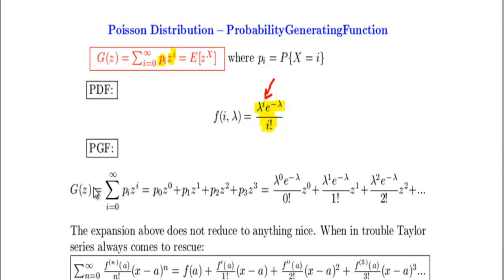So let's apply this formula. Here we're just saying probability that our variable i is 0 times z to the power of 0, probability that our variable i is 1 times z to the power of 1, etc.